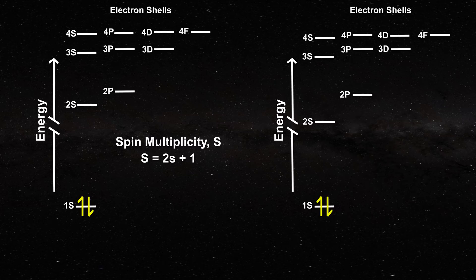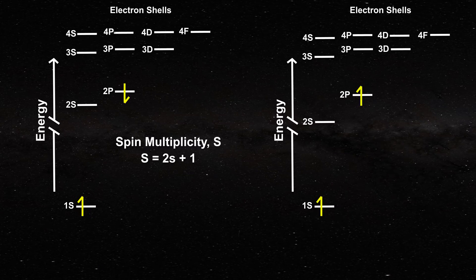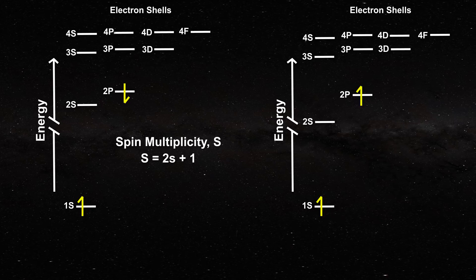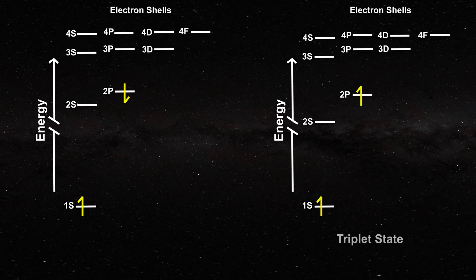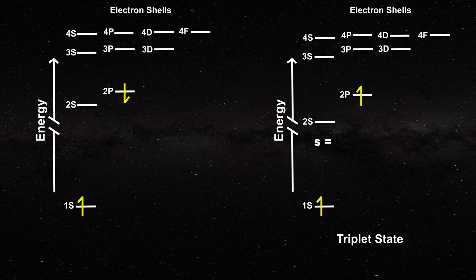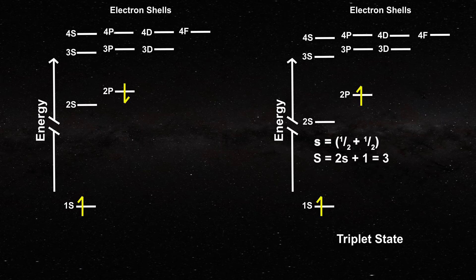Now, if you excite a helium electron, it can move up to higher energy levels. There are two states to consider. First, if both electrons have the same spin, then we say that we have a triplet state, since s is equal to one-half plus one-half, and two s plus one is now equal to three.